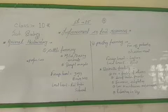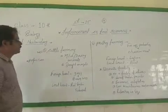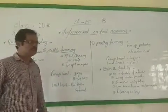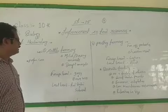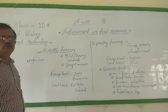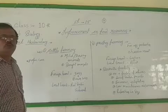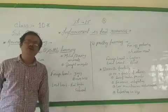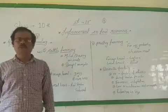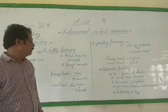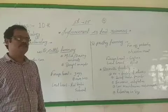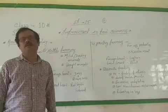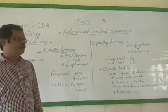Now we will study about cattle farming. What is cattle farming? It is the rearing of animals — generally cows, buffaloes, and others — kept inside cattle farms. As food we obtain from animals, they are meat, fish, milk, and egg — all obtained from animals.